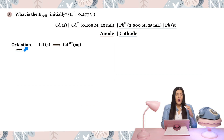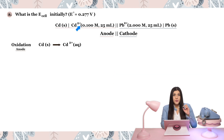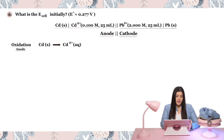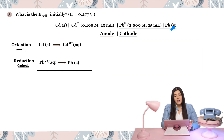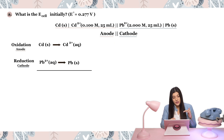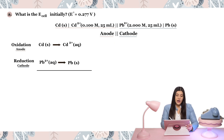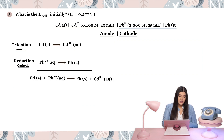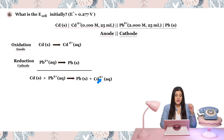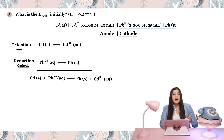We know the anode is where oxidation takes place, so cadmium is going to go from a solid to its 2-plus ion state. The cathode is where reduction takes place — lead goes from that 2-plus ion back to its solid state. This is how we translate cell notation into an actual balanced equation. I'm going to combine the reactants together and the products together to give us our overall balanced equation, which tells us how many electrons are being transferred overall.